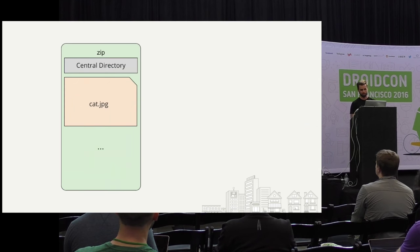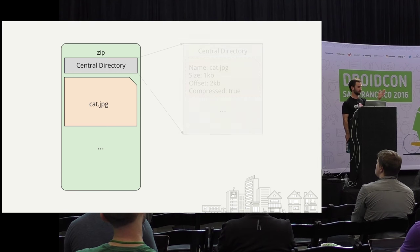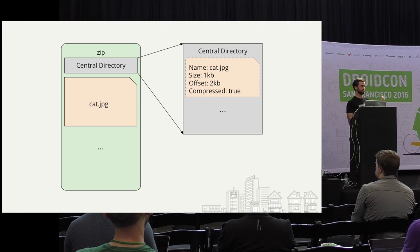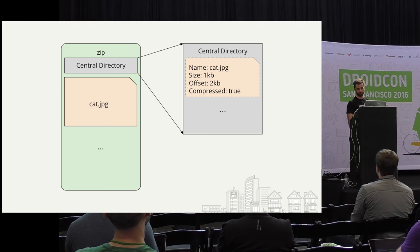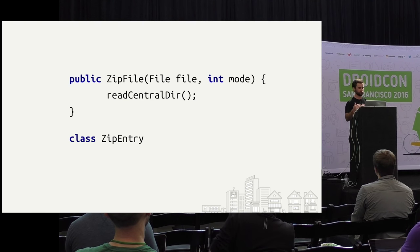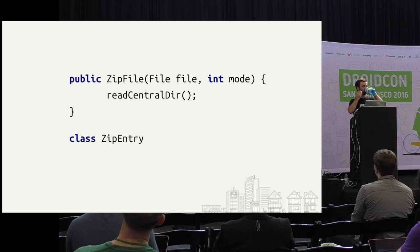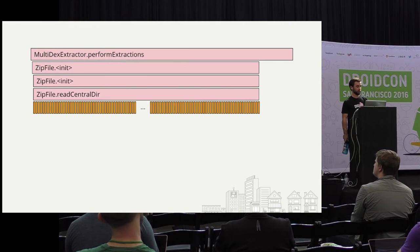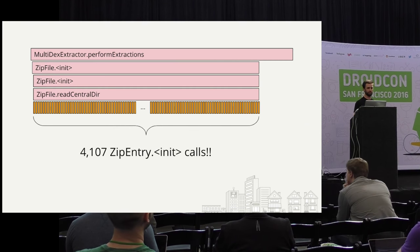So, zip files. Imagine you have a zip file that contains a cat picture. A zip file contains a central directory that's basically a listing of all the files inside — it'll say the size of the file, the offset for it, whether or not it's compressed. Once you know the central directory, you can jump in anywhere to start reading something. When you create a ZipFile constructor, it immediately reads the central directory so that later on when you want to access a file, you just try to access it. The class corresponding to each entry in the central directory is called a ZipEntry. Below the readCentralDirectory line in the trace, there's a ton of tiny little method calls — they're all ZipEntry constructors, and there are 4,000 of them.